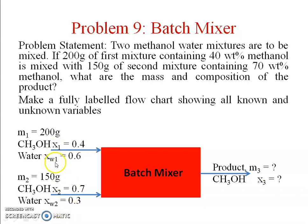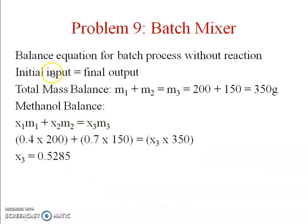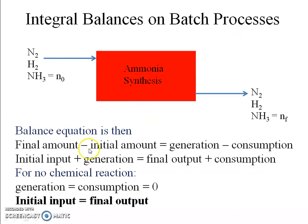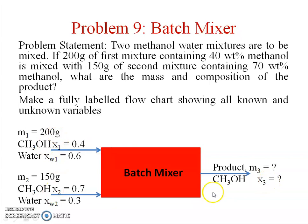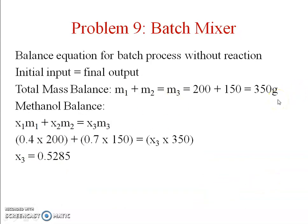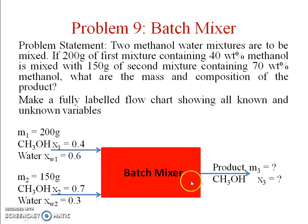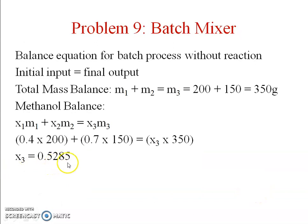How many components are there? Two — methanol and water. So we can write two independent balance equations. The balance equation takes the form: initial input = final output. Writing the total mass balance: M₁ + M₂ = M₃, which gives M₃ = 350 grams. Then taking either a methanol or water balance, we calculate the mass fraction of the mixed stream coming out, which comes out to x₃ = 0.5285. It's straightforward — you can pause the video and check. This is a simple problem.